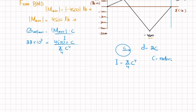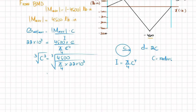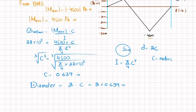Taking the cubic root of both sides, c equals 0.639 inches. Since diameter equals 2 times radius, d equals 2 times 0.639 inches, giving a diameter of 1.28 inches. This is the smallest allowable diameter of the shaft for the given loading and allowable bending stress.